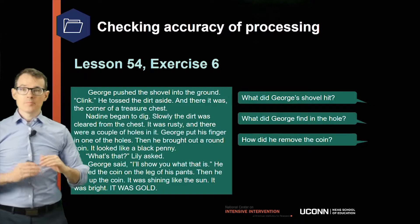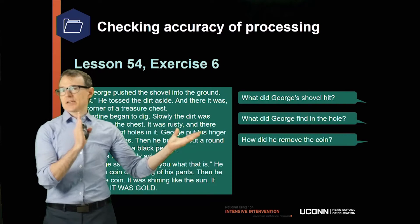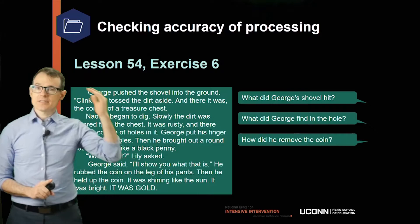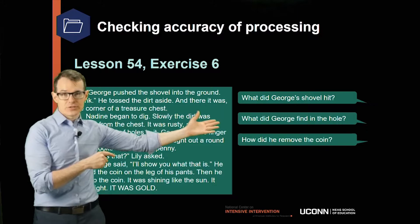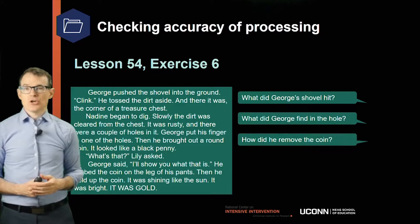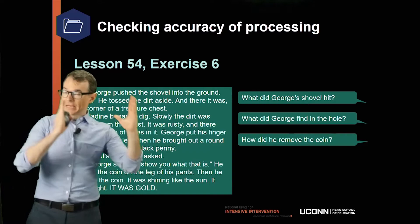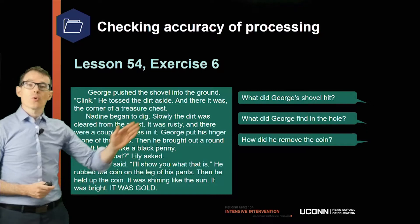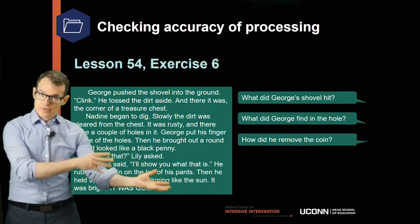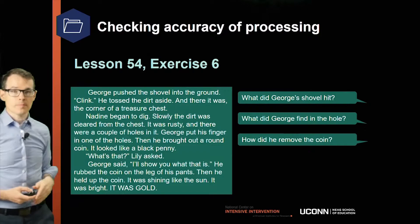In this imaginary example, assuming some students didn't get the question about how George removed the coin correct, that suggests something I need to reinforce right now—and also that it wasn't clear to students. It's partly because I asked the end question first, and also because the text doesn't explicitly say he took it out—putting his finger in the hole is an inference. So I reinforce the point: 'How did he remove the coin? If I look back at the paragraph, it says George put his finger into one of the holes and brought out a round penny—so that's how he removed the coin.'